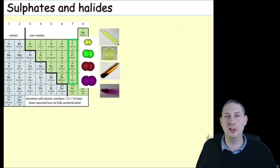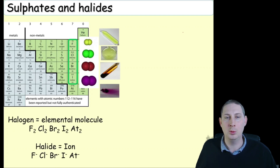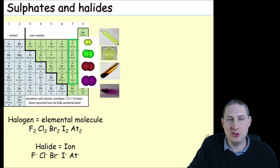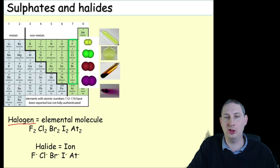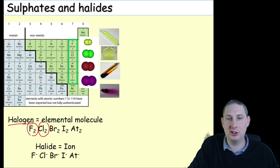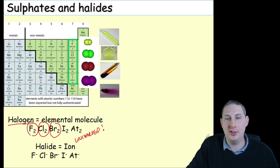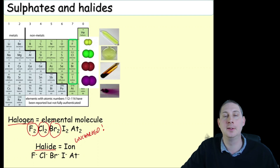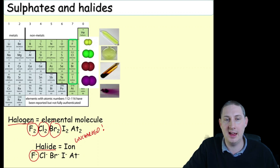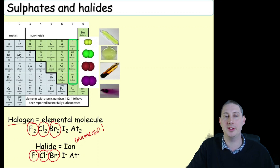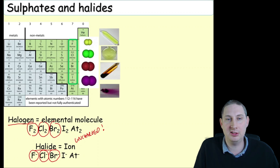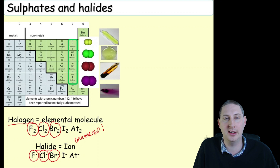We'll start by looking at sulfates and halides. The halogens are diatomic: fluorine F₂, chlorine Cl₂, bromine Br₂ — they are uncharged. When halogens react they form halides, which are ions. These are not diatomic; they go round by themselves: fluoride F⁻, chloride Cl⁻, bromide Br⁻. Some students even up to A-level struggle with that distinction.